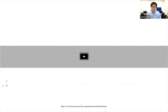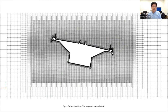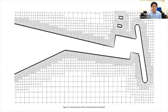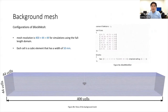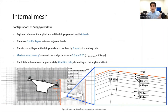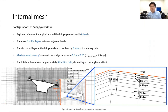For the mesh scheme, we're using snappyHexMesh. Cells within the background mesh are cubes with a width of 50 mm, and there are six levels of refinement. Five transition layers were added between adjacent refinement levels. Boundary layers contain eight layers of cells with an overall thickness of 0.5 mm. Maximum and average Y-plus values at the bridge surface are 1.35 and 0.35 respectively. The total mesh contains approximately 35 million cells, though this may vary across different geometric configurations.